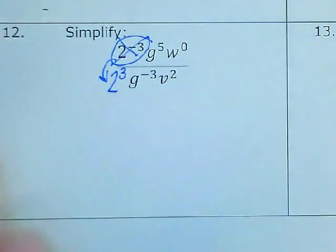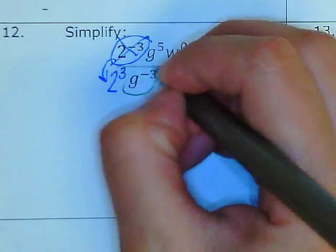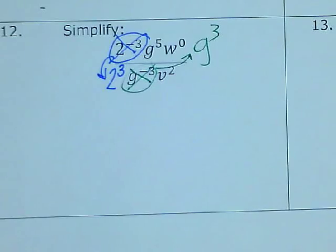I have g to the negative 3rd, so that's also a negative. This one I've got to move it up to get rid of that negative. I'm going to cross it out now.